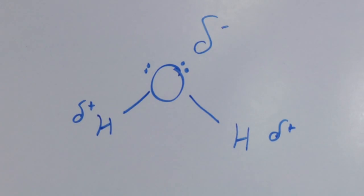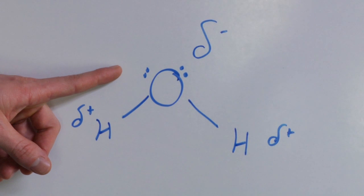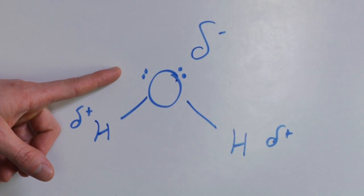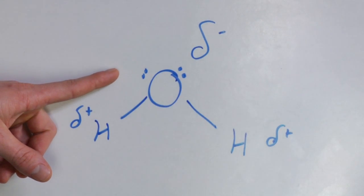A perfect example of a polar molecule is water. In water, oxygen has a greater electronegativity than the two hydrogens that surround it.